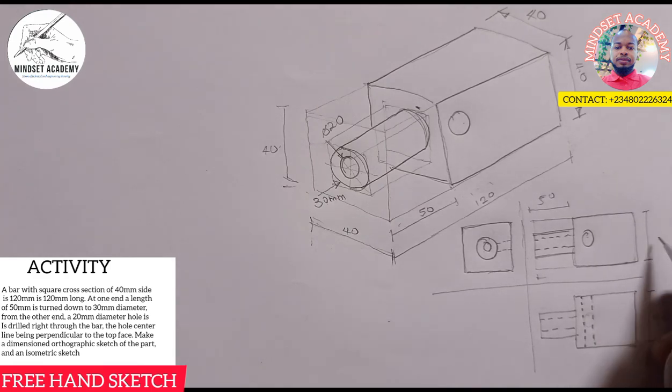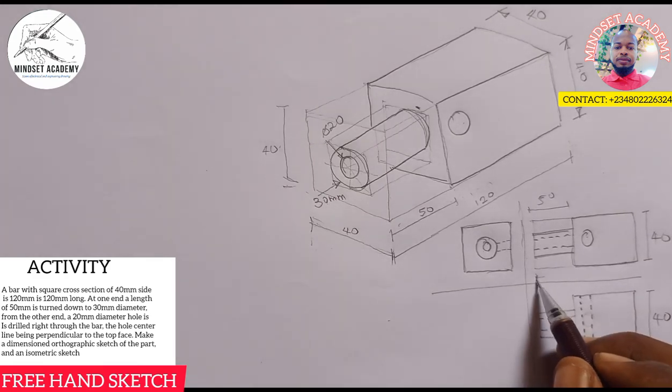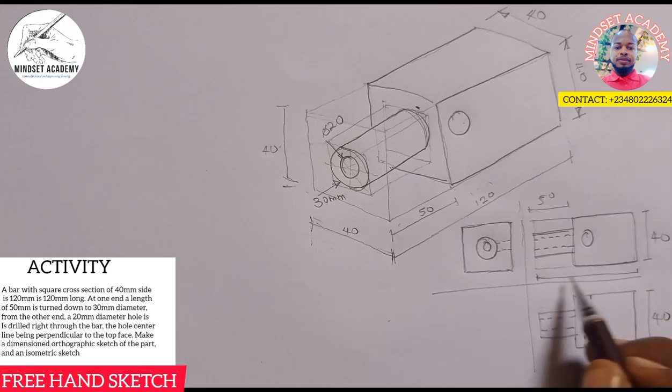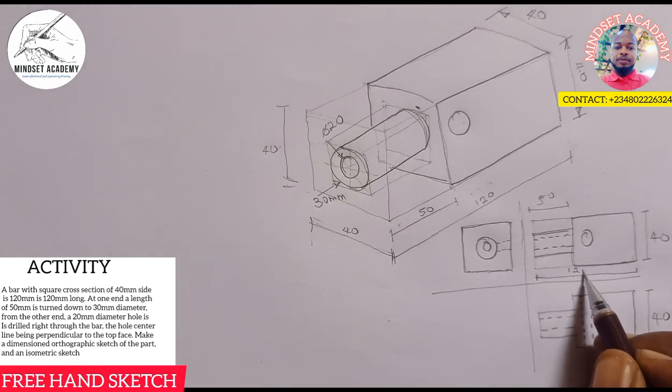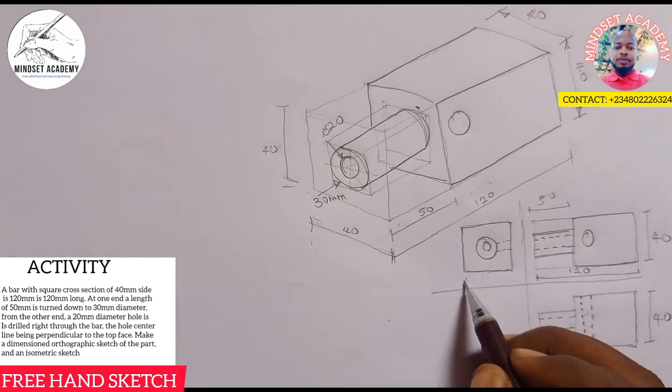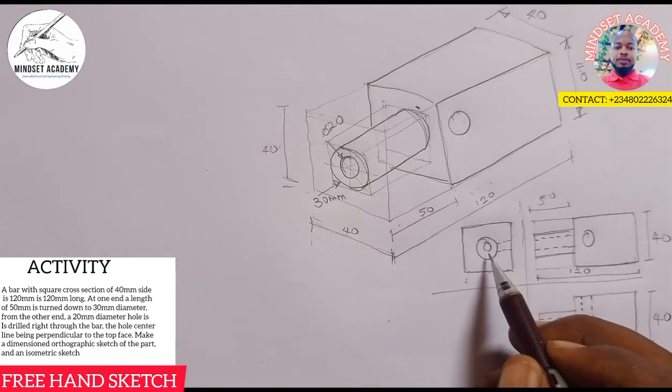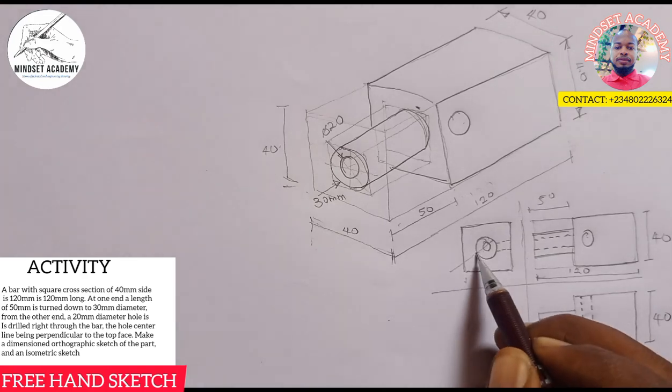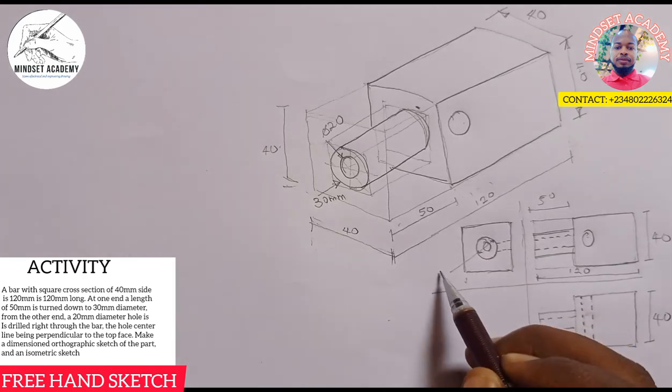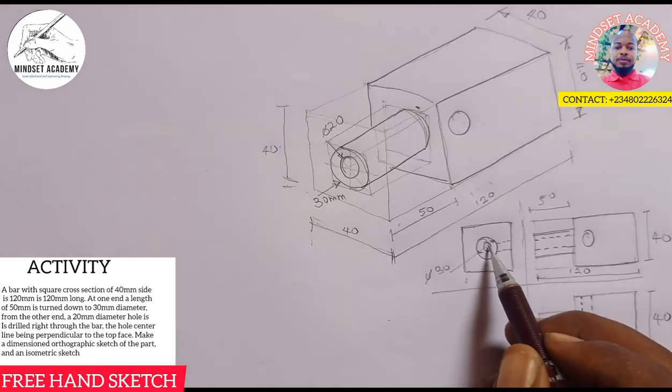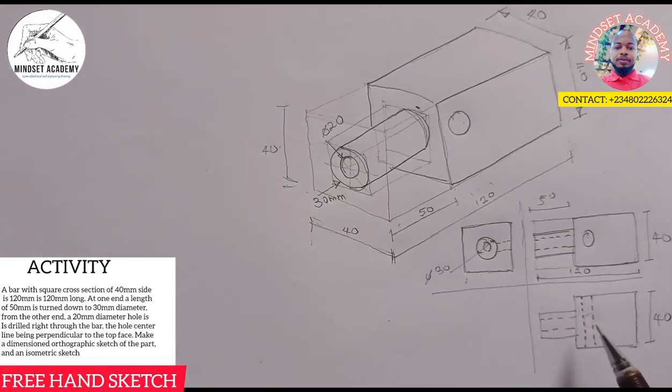It's uniform cross section, so from here the width is 40. The length is also 40. Then from here to here is 120. Here also the same thing, 40. Then our diameter - the diameter you see here is 30 millimeter diameter while the inner one is 20. This inner one you see here is 20.